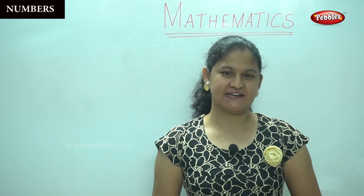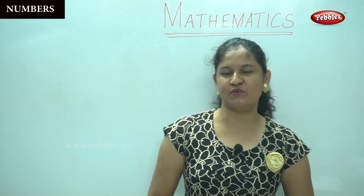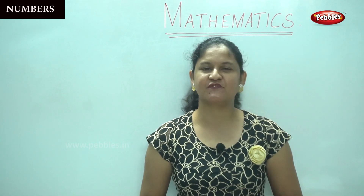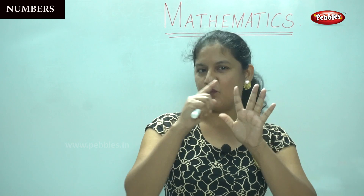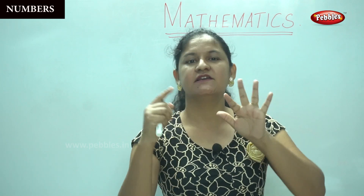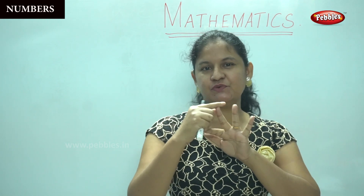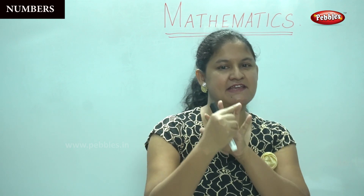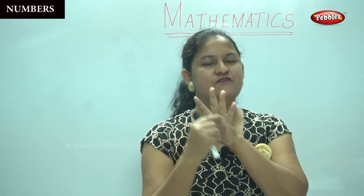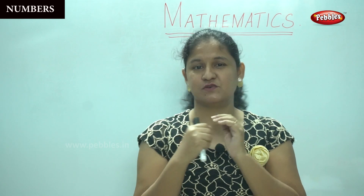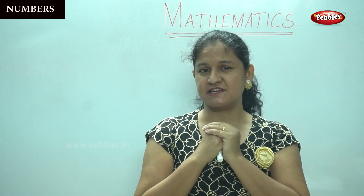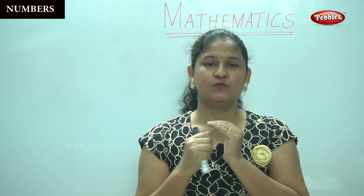Okay children, so now we see numbers from 0, 1, 2, 3, 4, 5. So what are all the numbers that we see?